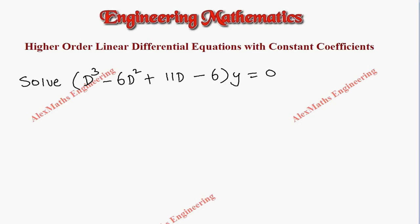Hi students, this is Alex here. In this question we are given: solve D³ - 6D² + 11D - 6y = 0.